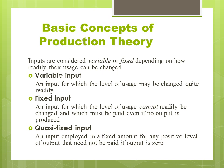Fixed input is an input for which the level of usage cannot readily be changed. A fixed input does not change as output changes. Examples include land, buildings, machines, labor management — these are fixed inputs which must be paid even if no output is produced. Quasi-fixed input is an input employed in a fixed amount for any positive level of output, but need not be paid if output is zero.